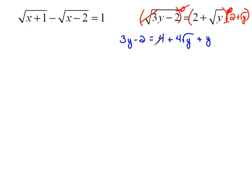Now let's combine like terms. If I move my plain y over to the left, that would be 3y minus y is 2y. And if I were to move this 4 over to the left, by subtracting 4, minus 2 minus 4 would be minus 6, equals 4 square roots of y.